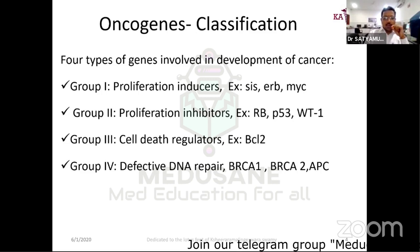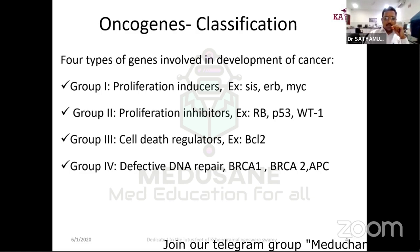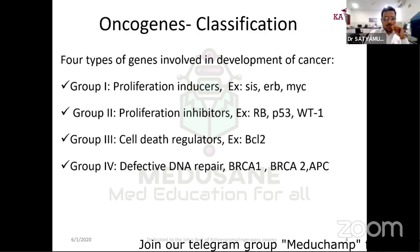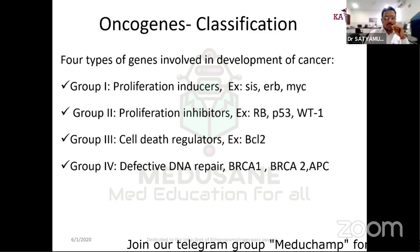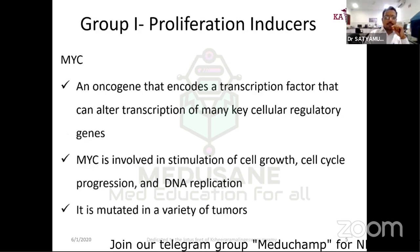Group 3 is cell death regulators, such as BCL2. Group 4 is DNA repair genes — BRCA1, the breast carcinoma gene, which involves defective DNA repair. These are the basic classic classifications of oncogenes. We will focus on Group 1 and Group 2, as these are frequently asked in academic questions.